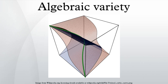However, any variety that admits one embedding into projective space admits many others by composing the embedding with the Veronese embedding. Consequently many notions that should be intrinsic, such as the concept of a regular function, are not obviously so.